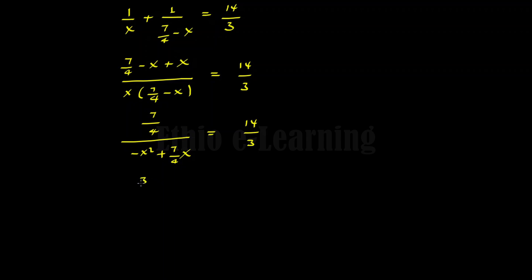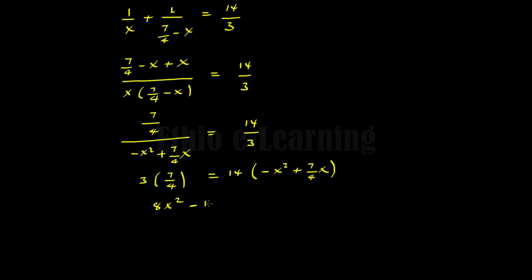After simplifying, we get a quadratic equation: 8x squared minus 14x plus 3 is equal to zero. This is a quadratic equation in the form ax squared plus bx plus c equals zero.